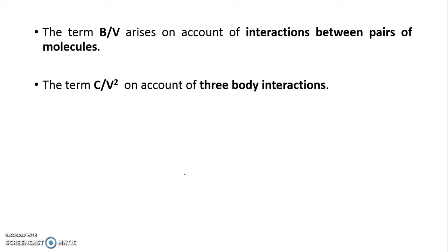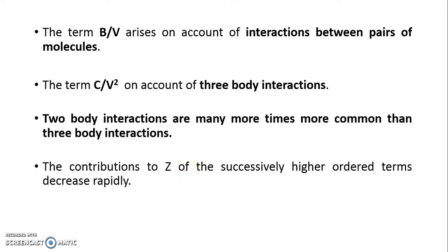Naturally, the interaction between a pair of molecules is much more likely than interaction between three molecules at a time. When there are two molecules they can interact with each other, but the presence of third molecule makes it difficult for all three to interact simultaneously, and hence b will have more value compared to c.